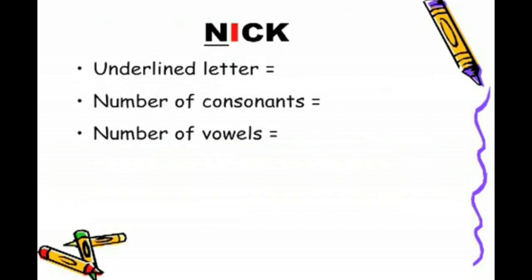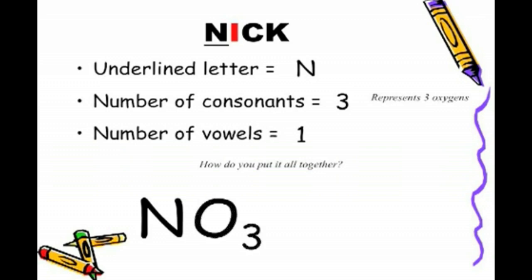Nick. The underlined letter is N. How many consonants does the word Nick have? It has three. How many vowels? One vowel. So how do we put it all together? Well, we start off with the letter N, the nitrogen. The number of consonants represents three oxygens. So we're going to write N and then an O3. The vowel now represents the negative one charge. And because there's only one vowel in the word Nick, there is only one charge, and that charge is a negative charge, negative one.